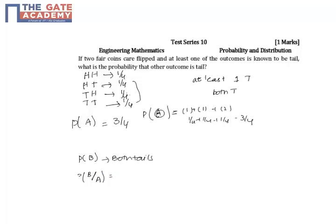So here we should use the conditional probability where you have to find the probability of having two tails given at least one of them is tail. So it is P of B intersection A by P of A.